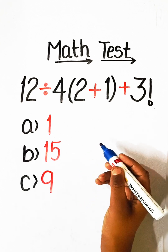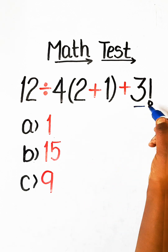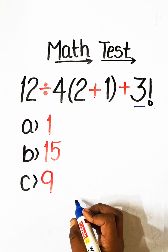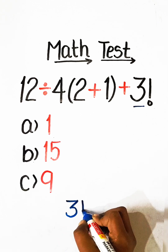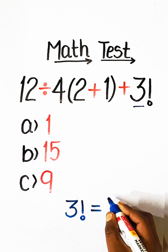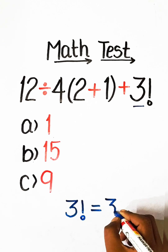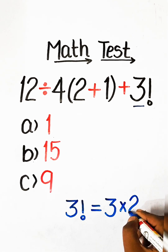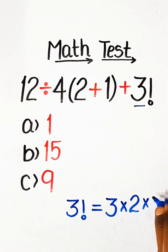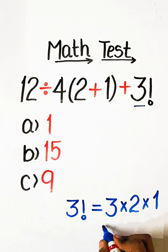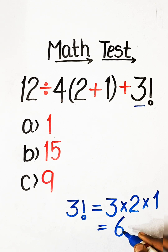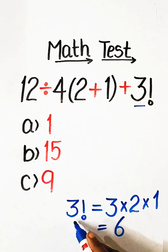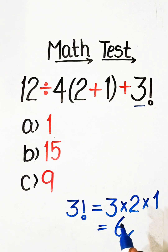First, we have to know what is the value of 3 factorial. So, we will write here: 3 factorial equals 3 multiplied by 2 multiplied by 1. 3 twos are 6, 6 ones are 6. So, the value of 3 factorial equals 6.